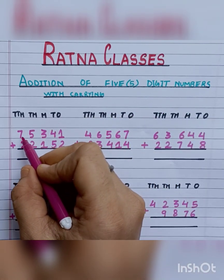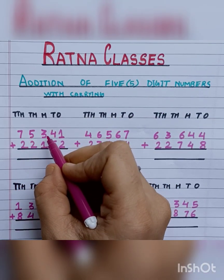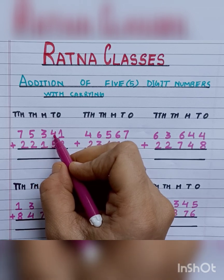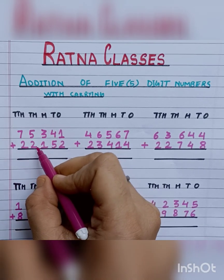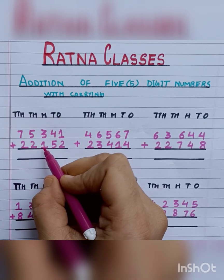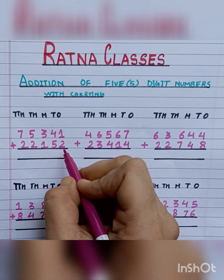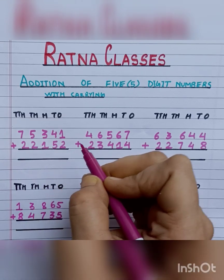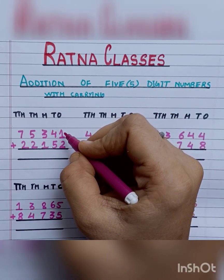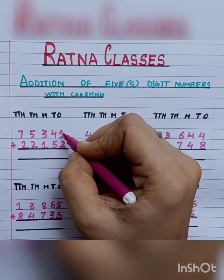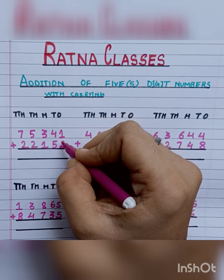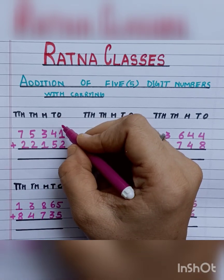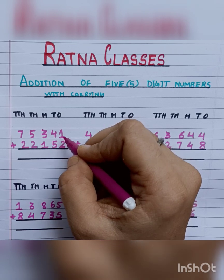First, our number is 75,341 plus 22,152. We will add the digits on the ones place first.